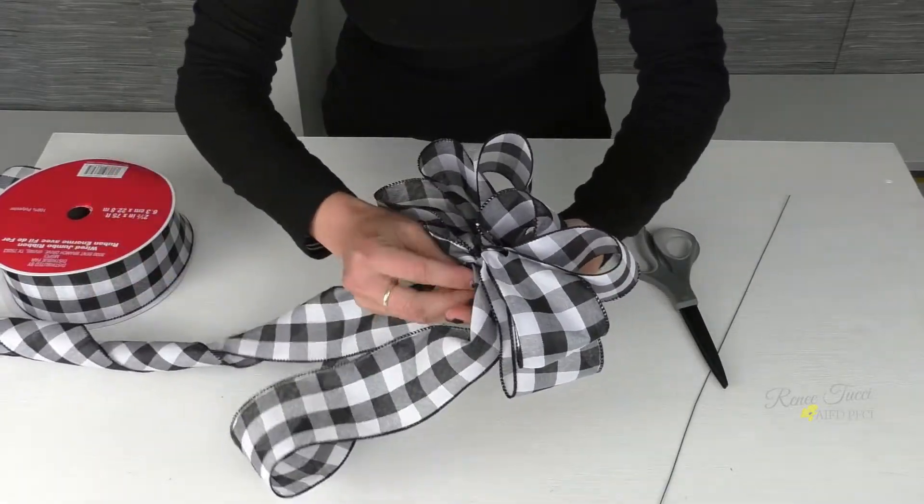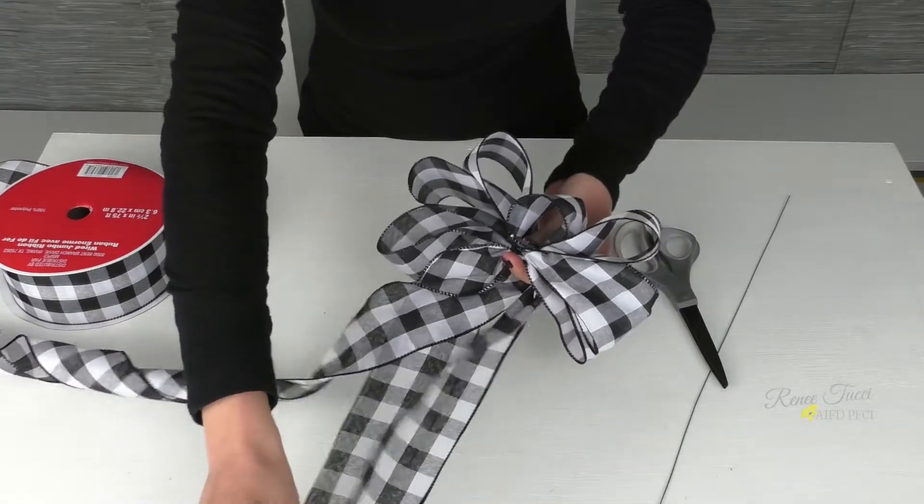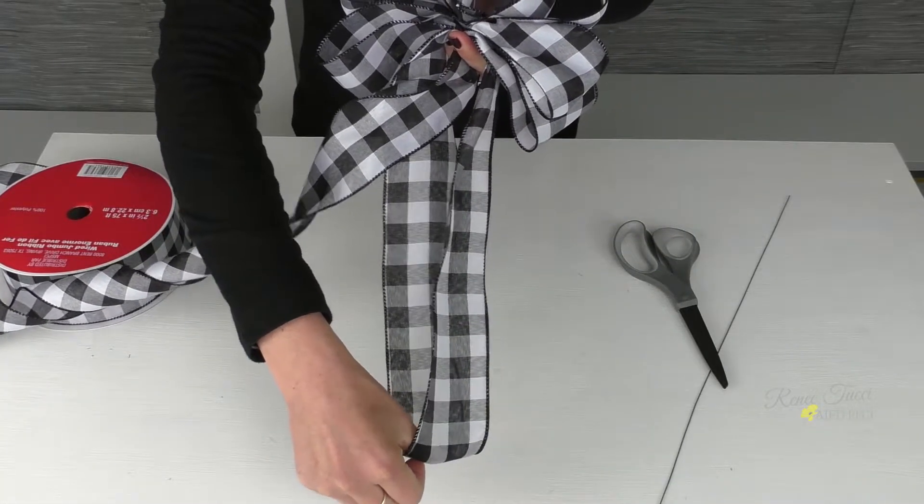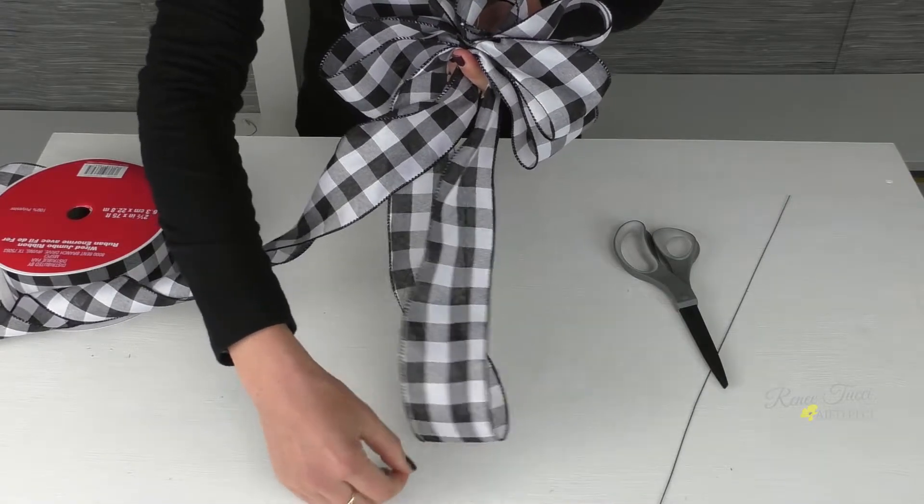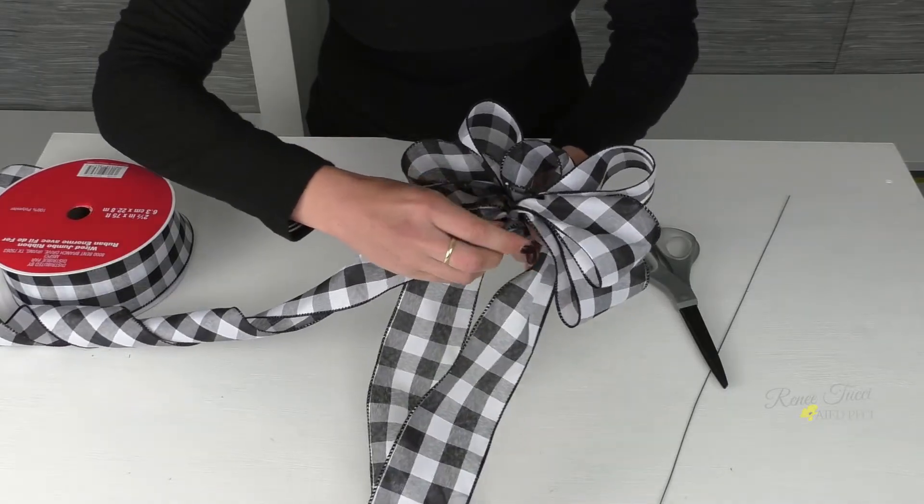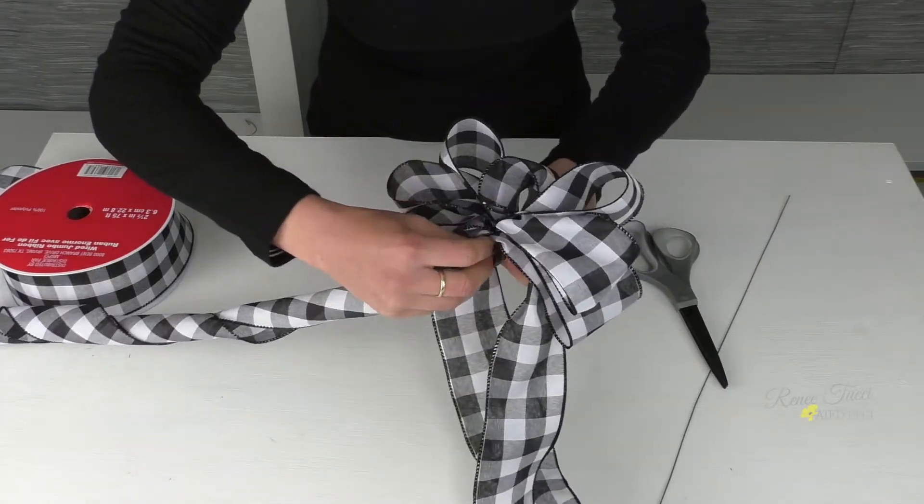And once we've gotten that in the area, this is a little bit longer than I want my streamer to be, or my tails to be. Which is fine because we can always cut extra off. But once I've got that up into the area, I'm going to twist and scrunch that in there.